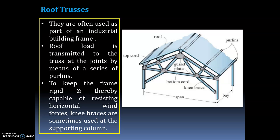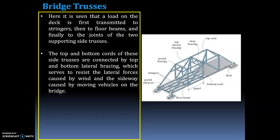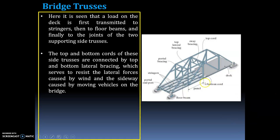For bridge trusses, a load on the deck is first transmitted to stringers, then to floor beams, and finally to the joints of the two supporting side trusses. The bridge truss has different parts: top cord, sway bracing, top lateral bracing, portal bracing, stringers, portal end support, floor beam, panel, bottom cord, and deck.